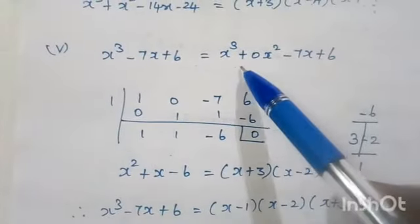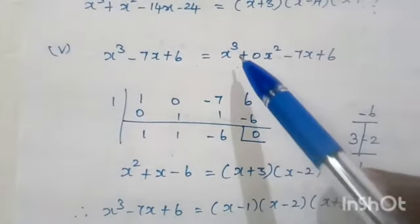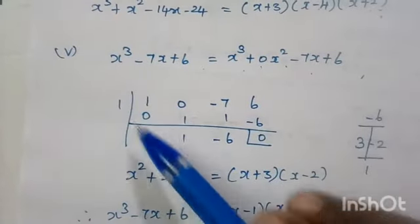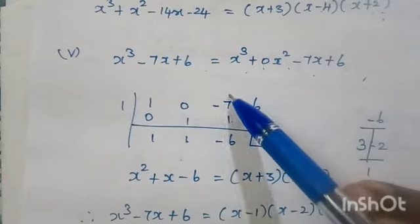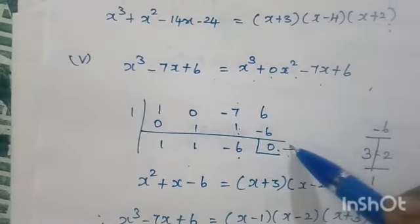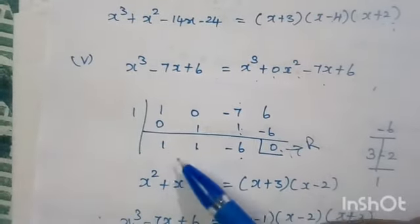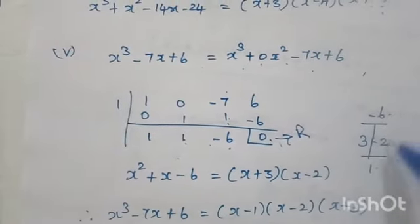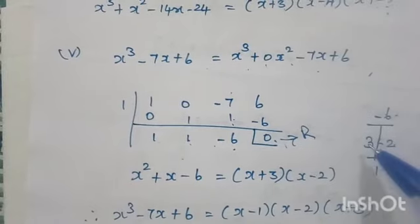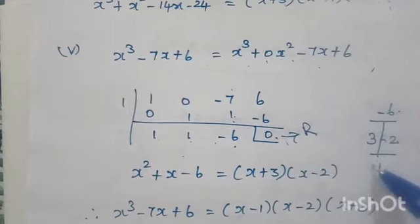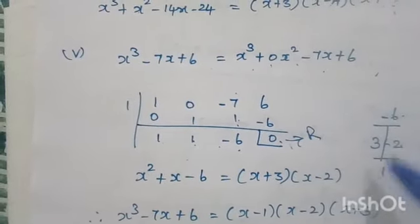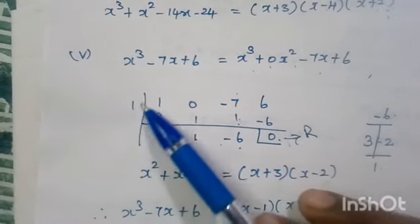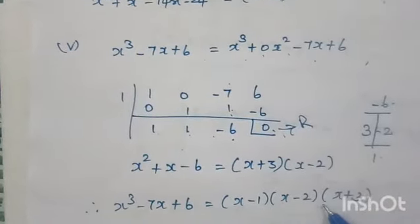Fifth problem: x³ minus 7x plus 6. The x² term is missing, so write as x³ plus 0x² minus 7x plus 6. Coefficients: 1, 0, minus 7, 6. Try 1: bring down 1, multiply 1 into 1 is 1, add to 0 gives 1, multiply 1 into 1 is 1, add to minus 7 gives minus 6, multiply minus 6 into 1 is minus 6, add to 6 gives remainder 0. Quotient is x² plus x minus 6. To factor: product minus 6, sum 1 — factors are 3 and minus 2. So x plus 3 and x minus 2. Since we used number 1, the factor is x minus 1. Final factors: x minus 1, x minus 2, and x plus 3.